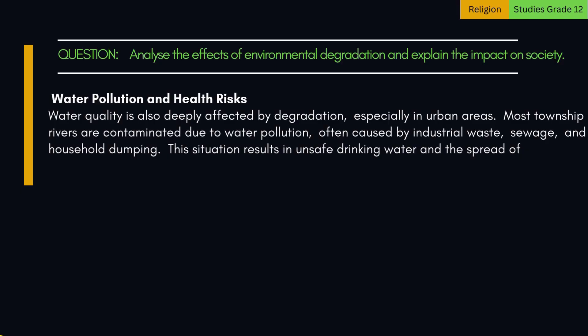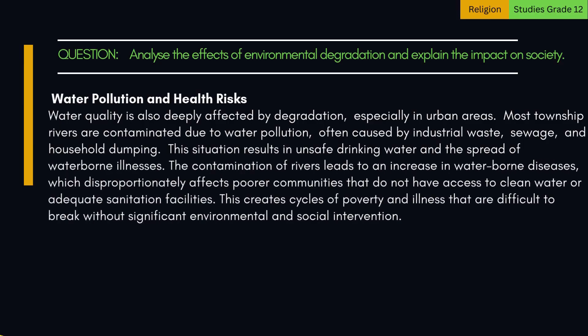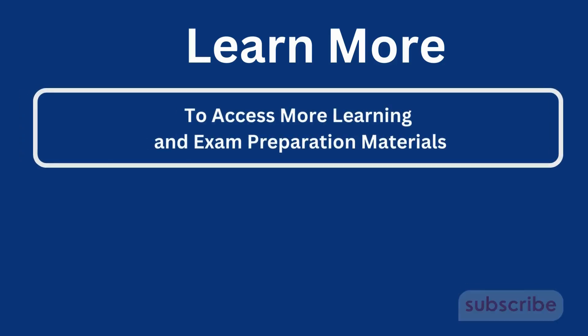This situation results in unsafe drinking water and the spread of waterborne illnesses. The contamination of rivers leads to an increase in waterborne diseases, which disproportionately affects poorer communities that do not have access to clean water or adequate sanitation facilities. This creates cycles of poverty and illness that are difficult to break without significant environmental and social intervention.